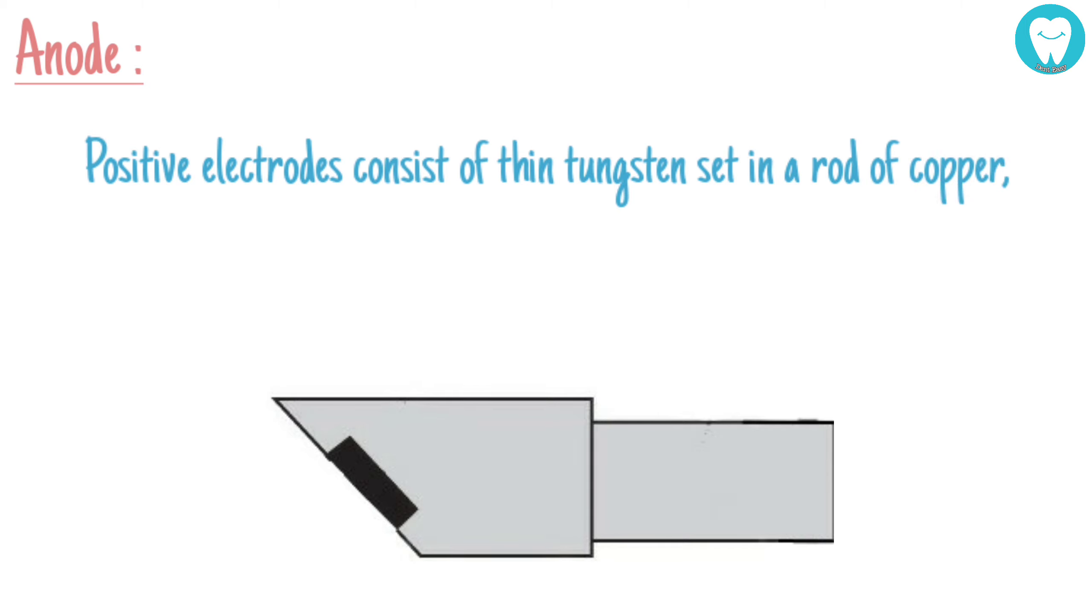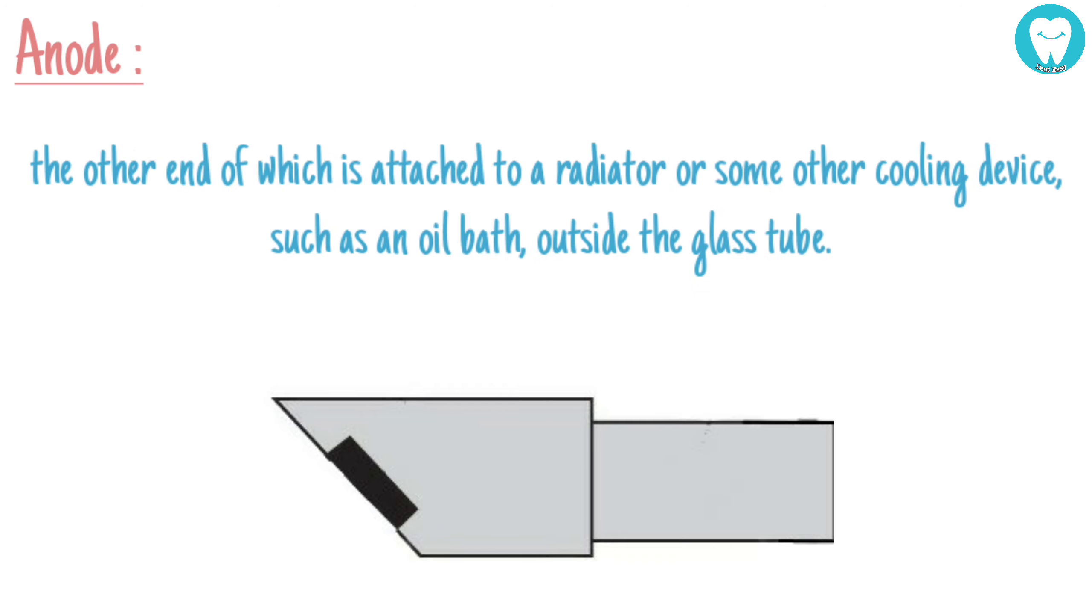The positive electrode consists of thin tungsten set in a rod of copper, the other end of which is attached to a radiator or some other cooling device such as an oil bath outside the glass tube.